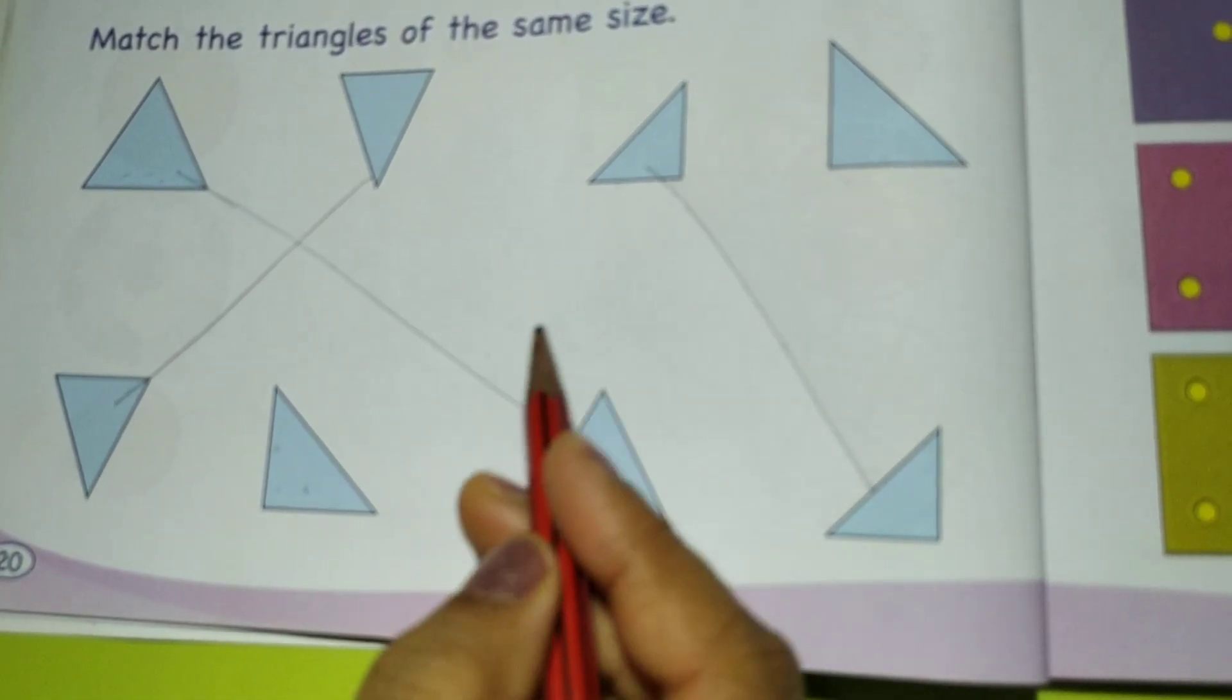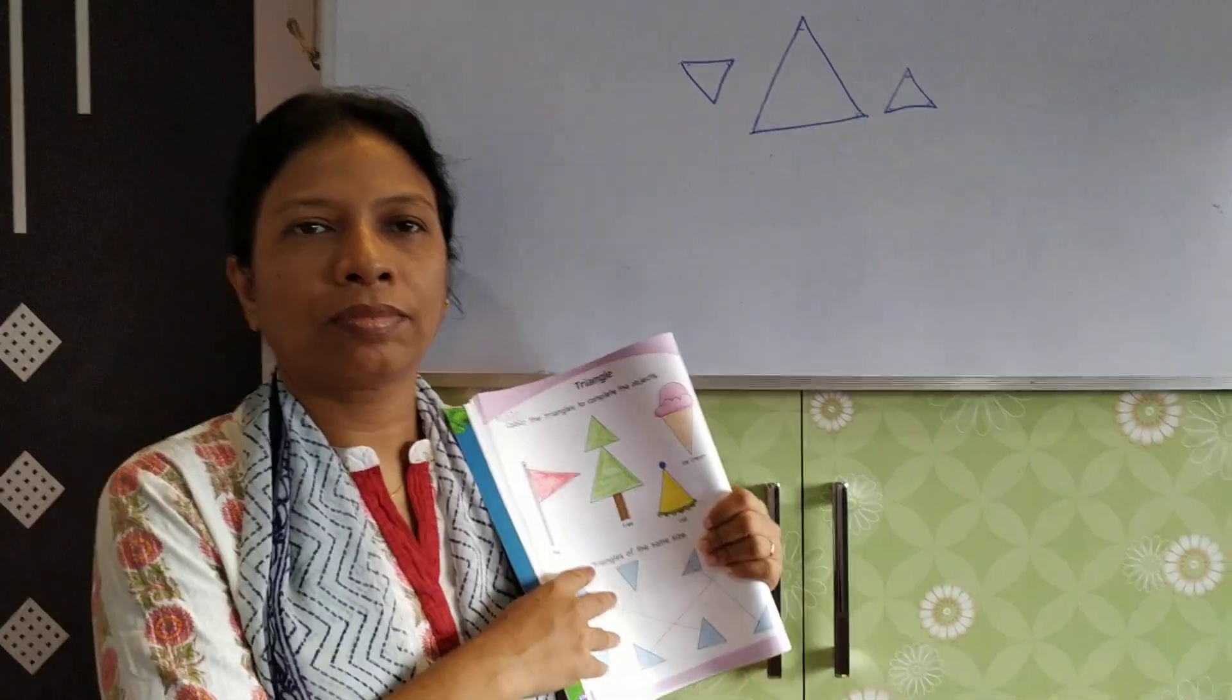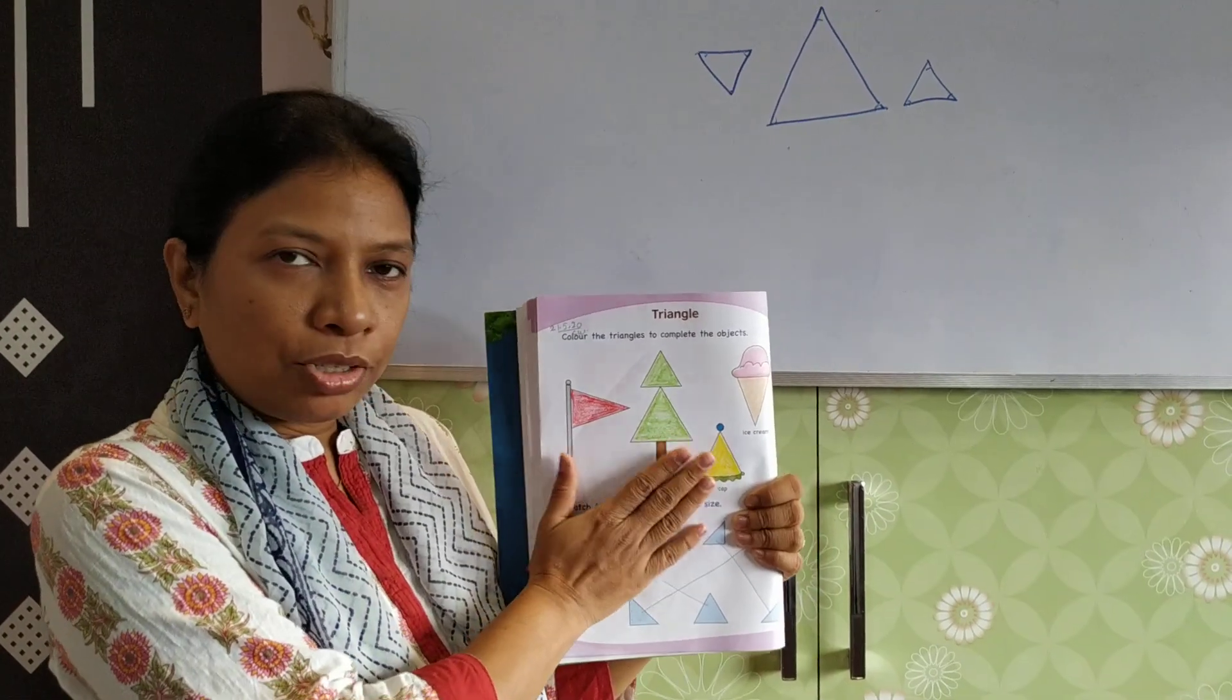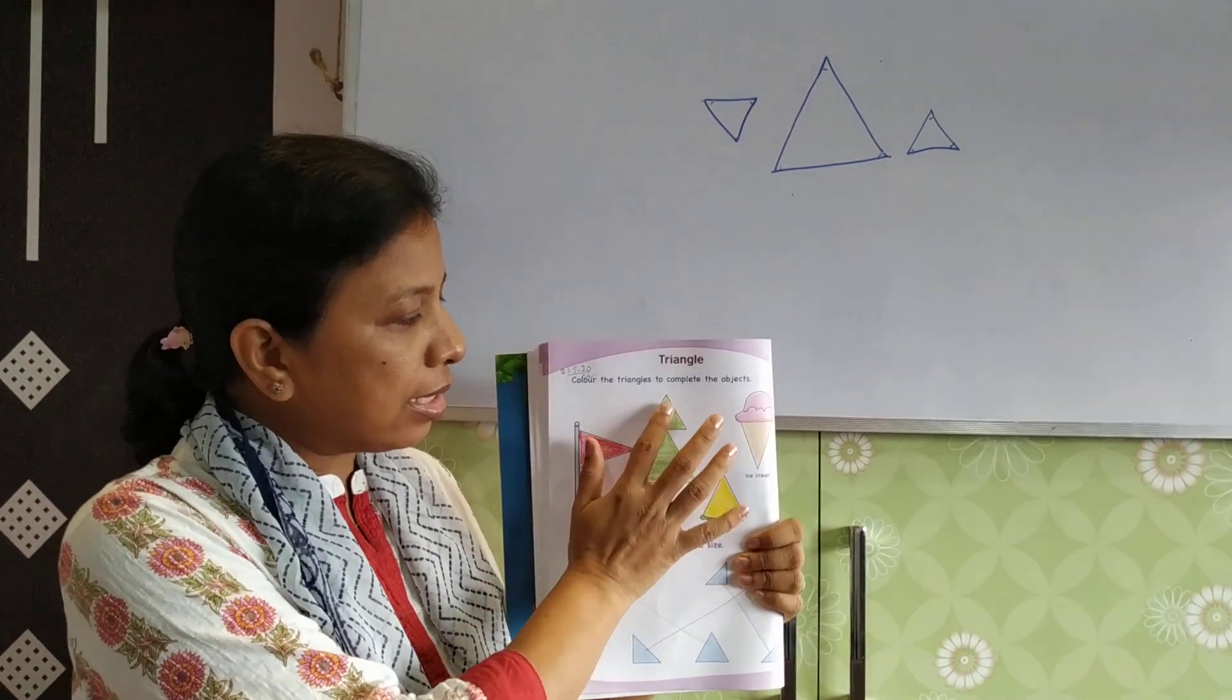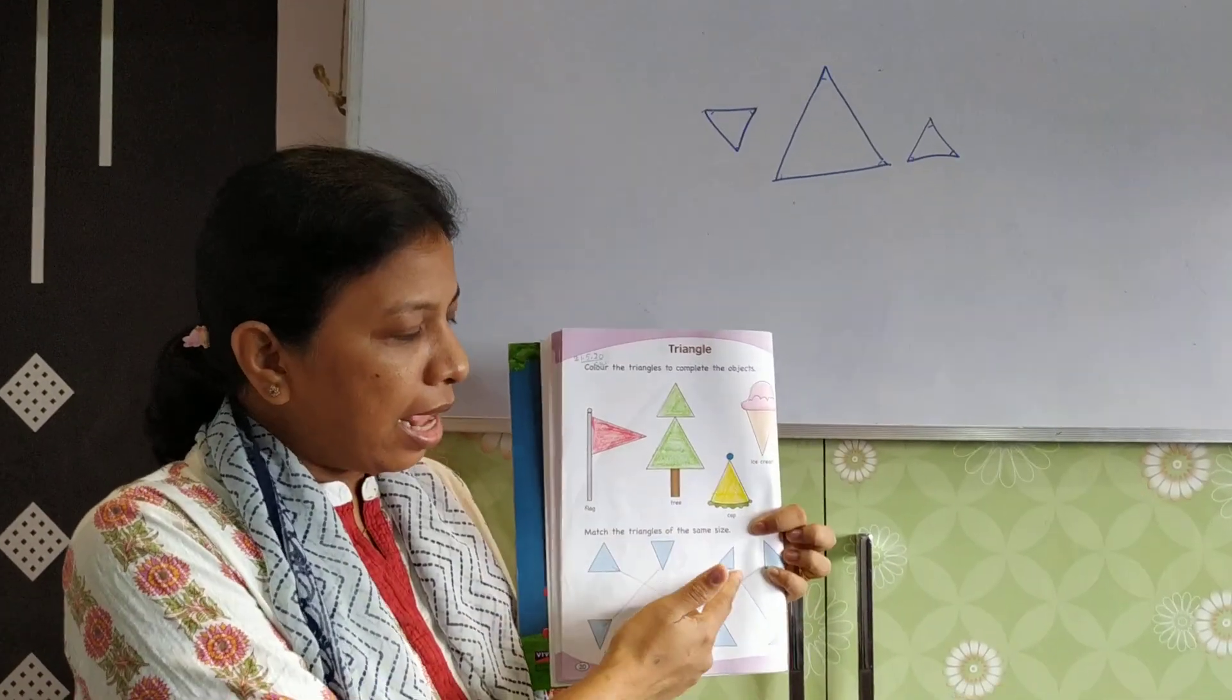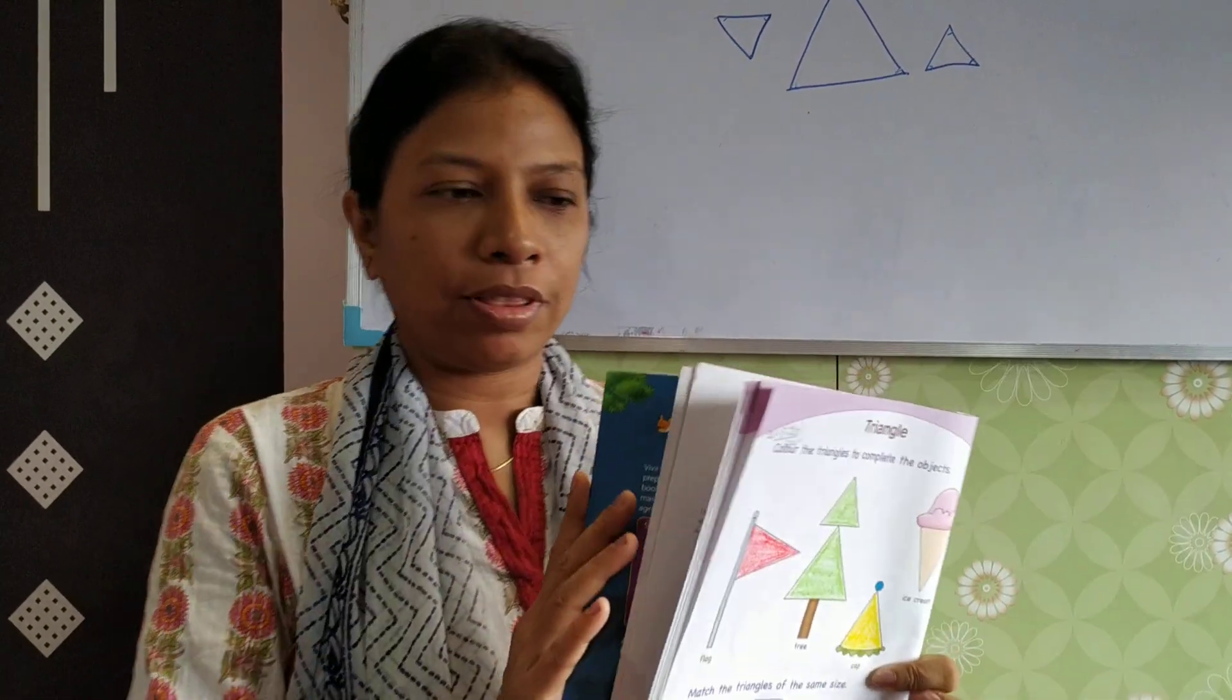So kindly complete your work, color it nicely, fill the colors nicely inside these triangles. And then as we did, match them. We have finished with this topic, triangle. So what you will do is practice triangle of different sizes, then circle that we have finished, and then I will see you in the next video. Thank you, children.